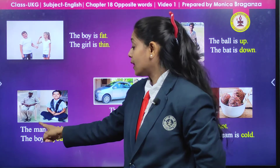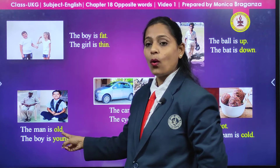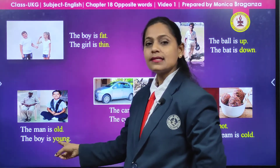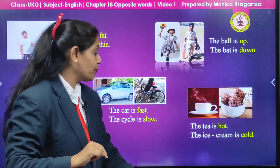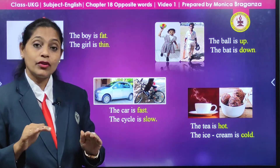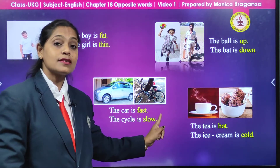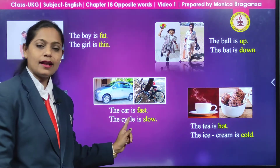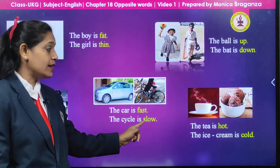Here we are going to say: the man is old and the boy is young. The boy is young. Same way, when we go in a car we reach fast and when we go in a cycle we go slow. So: the car is fast and the cycle is slow. Again children: the cycle is slow.